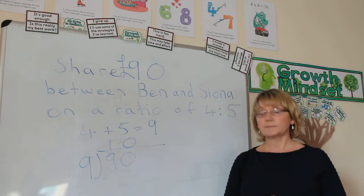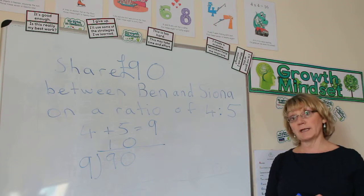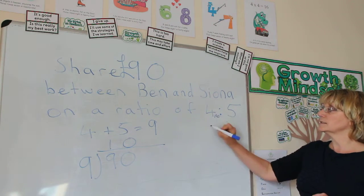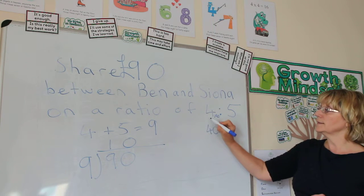Step 3, go back to the original ratios and multiply them by the answer to the division. 4 times 10 is 40, and that's what Ben gets.